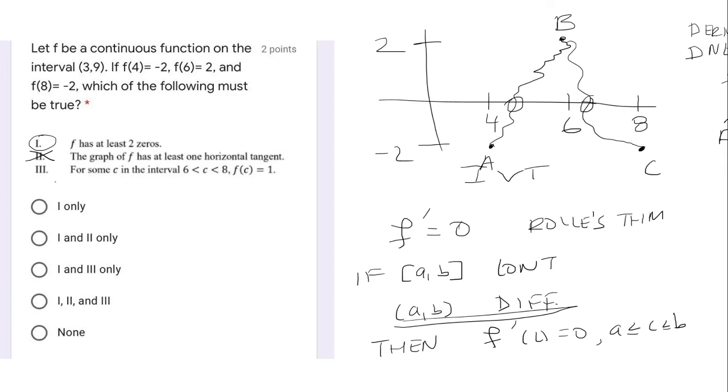And then three, for some C in the interval six to eight, f of C is one. If we go back to this graph, we know that we have to connect the dots here from B to C and the interval is between negative two and two.